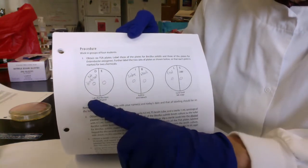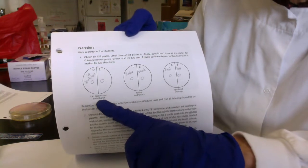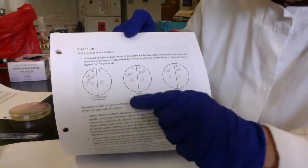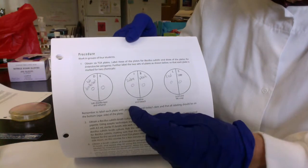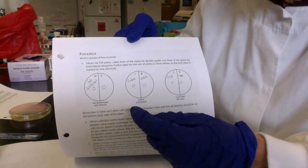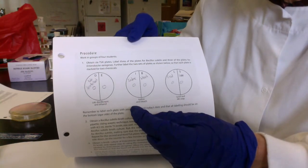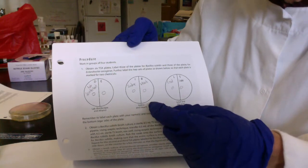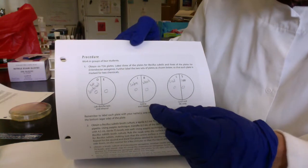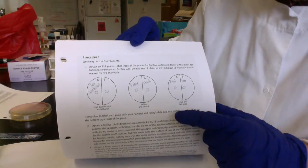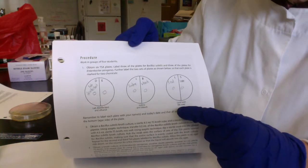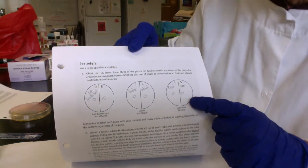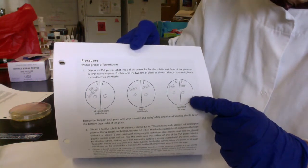For example, we are going to test our lab disinfectant, we are going to test ethanol and alcohol, we are going to test tincture of iodine, which is iodine dissolved in alcohol. We are going to test one-to-ten freshly diluted bleach, Lysol the tub and tile cleaner for your bathroom, and then we are going to do dish soap.